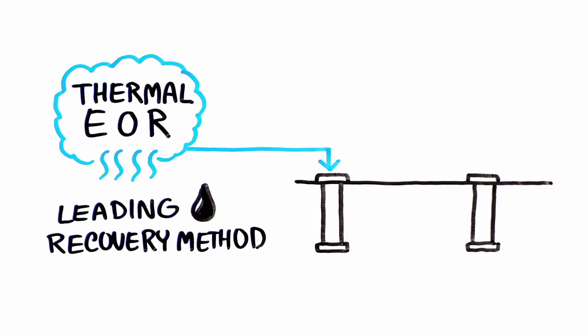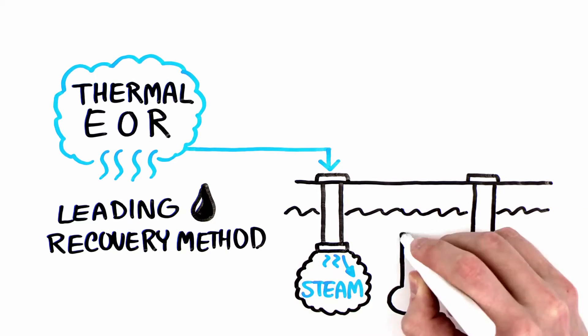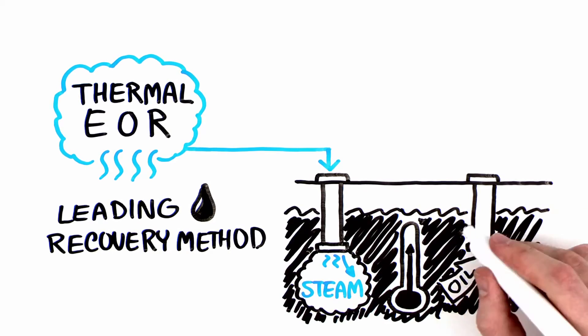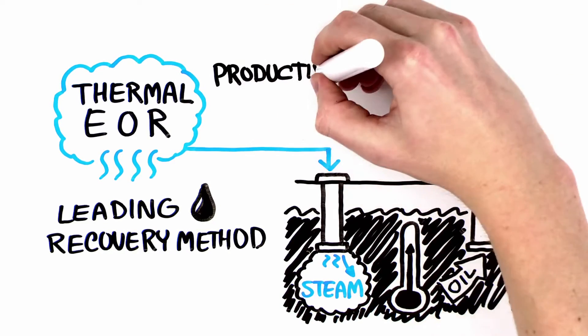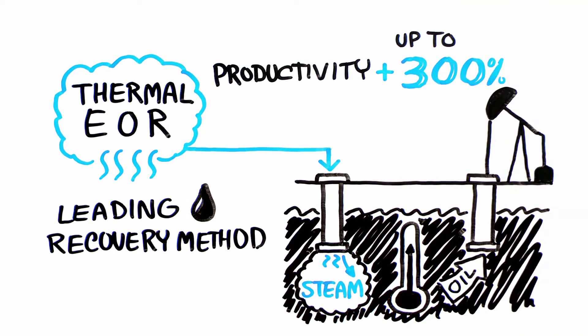In thermal EOR, high-pressure steam is injected into the reservoir, making the oil easier to pump to the surface, boosting well productivity by up to 300%.